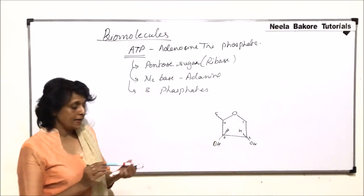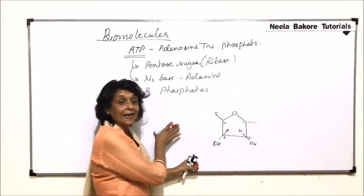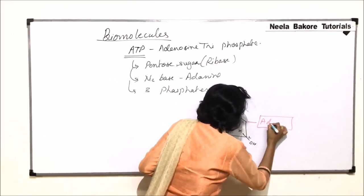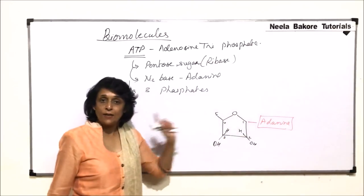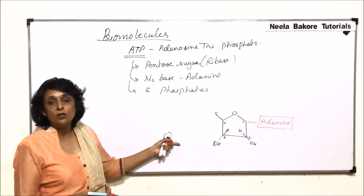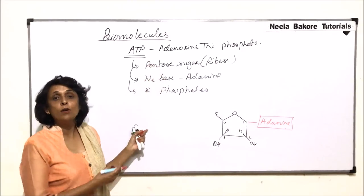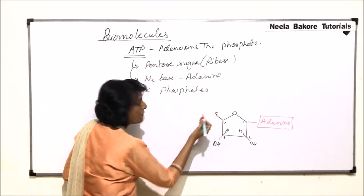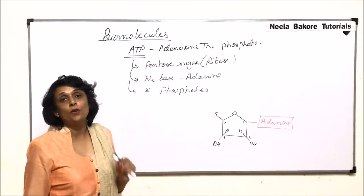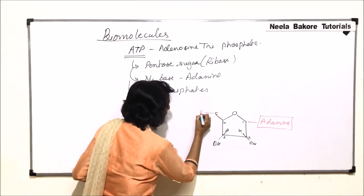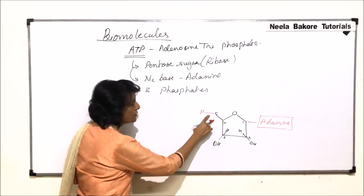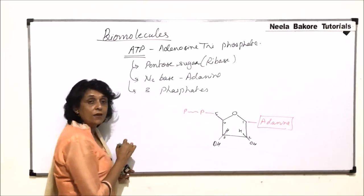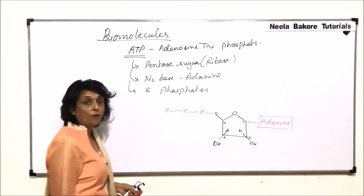Carbon number 1 is attached to the nitrogen base. In this case it is going to be adenine, so here adenine is attached. We don't have any variation here because we are talking about the molecule which has adenine as a nitrogenous base. Attached to the fifth carbon are three phosphates — we draw them like this. This is the first phosphate, this is the first bond, the second bond again a phosphate, and the third bond again a phosphate.